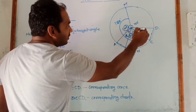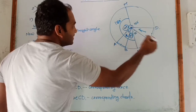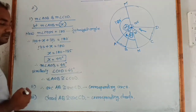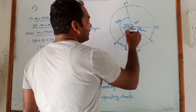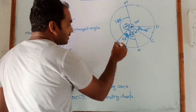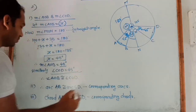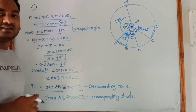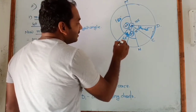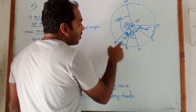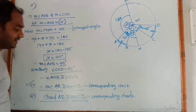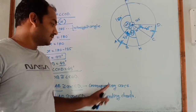Similarly, solving for angle DOC, we get angle DOC (or COD) is also 45 degrees. Since these two angles are equal — both 45 degrees — their corresponding arcs AB and CD are congruent. And due to this, the corresponding chords AB and CD are also equal. So chord AB and chord CD are equal as they correspond to congruent arcs.